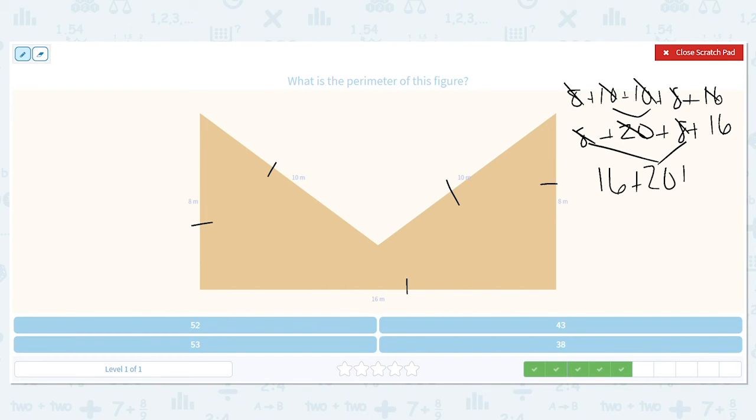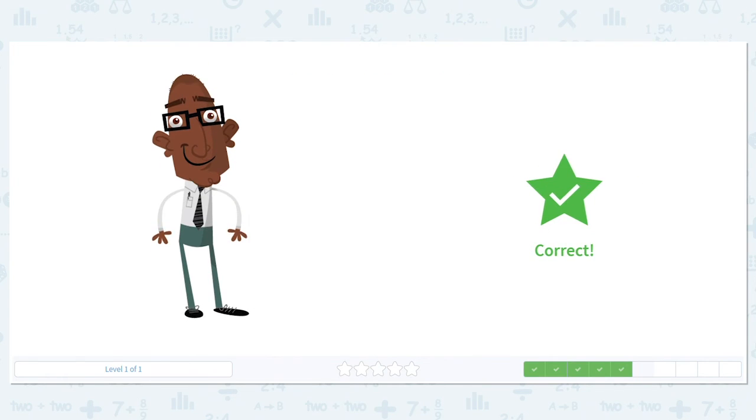And I still have this last 16 to bring down. So now I can do 36 plus 16. 6 plus 6 is 12. I carry the 1. 1 plus 3 is 4, plus 1 more is 5. So my perimeter is 52 meters.